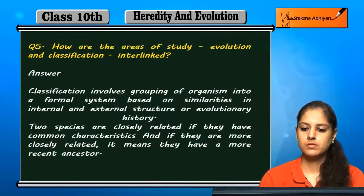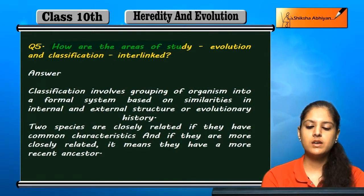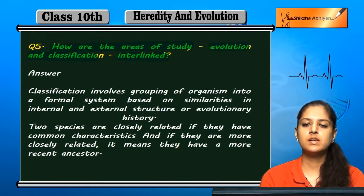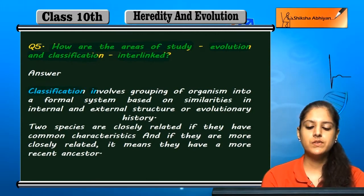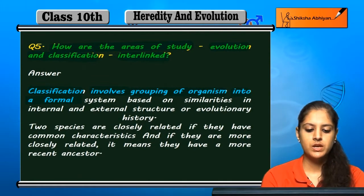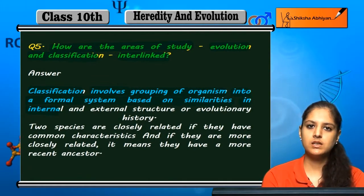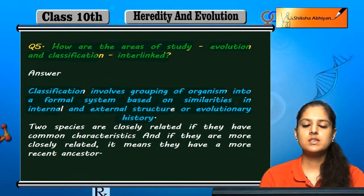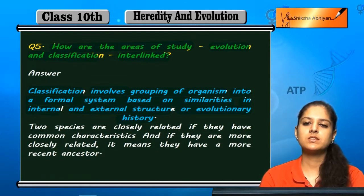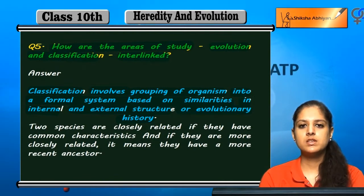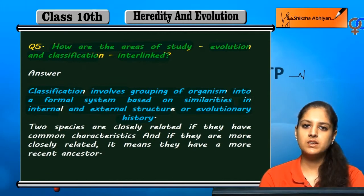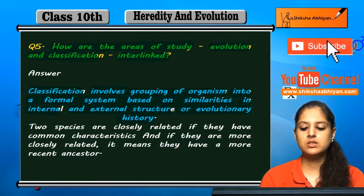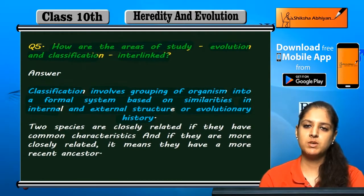Question 5: How are the areas of study evolution and classification interlinked? Evolution and classification are linked. Classification involves grouping of organisms into a formal system based on similarities in internal and external structure, or evolutionary history. If we classify some organisms, we find similar things and classify them on the basis of their internal structure, external structure, or evolutionary history.